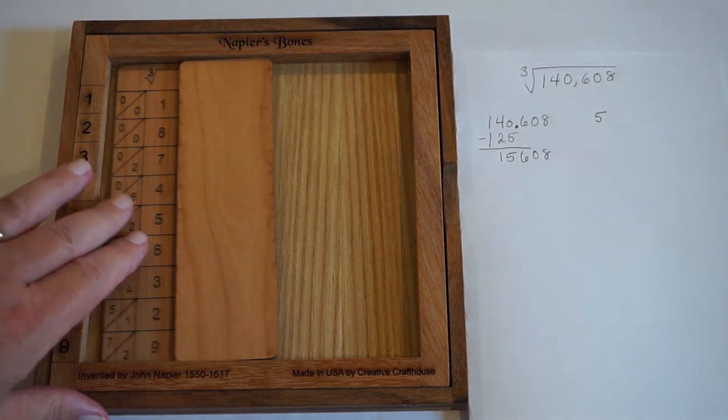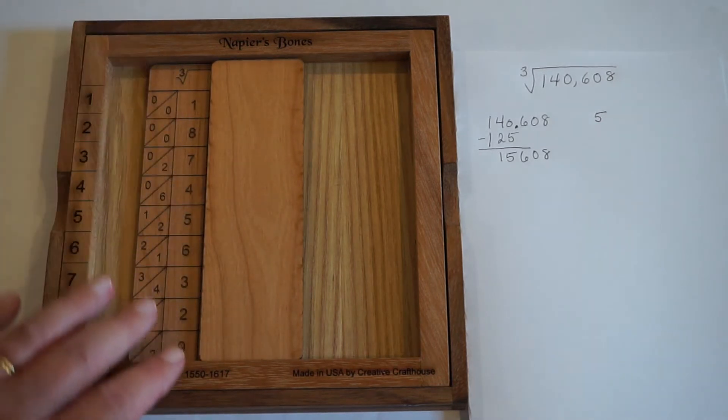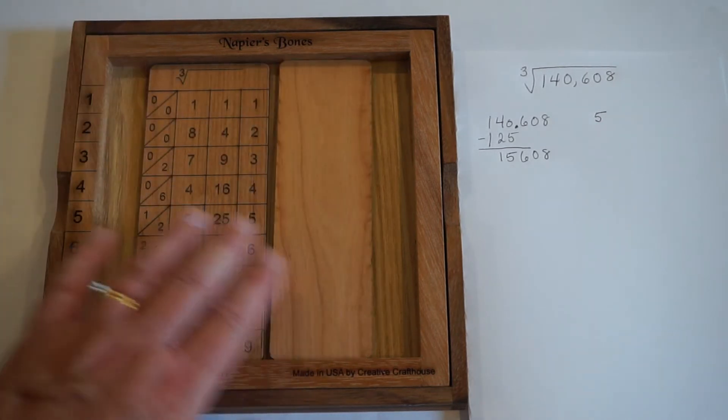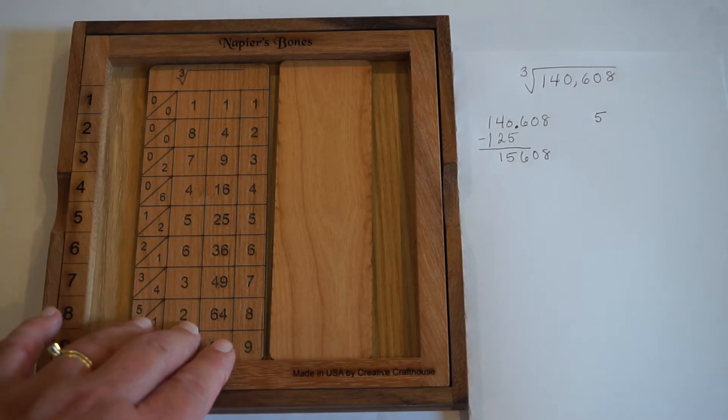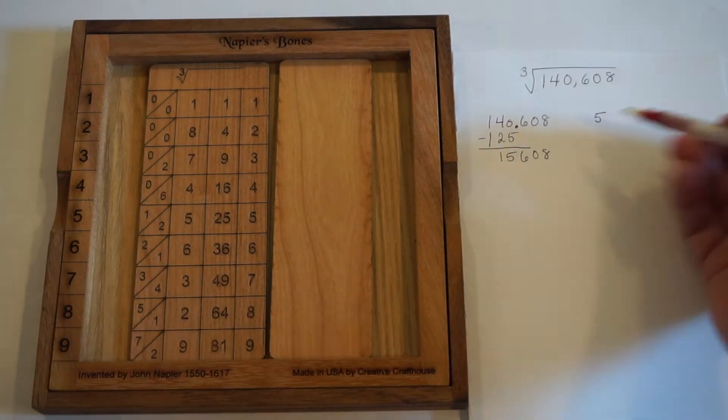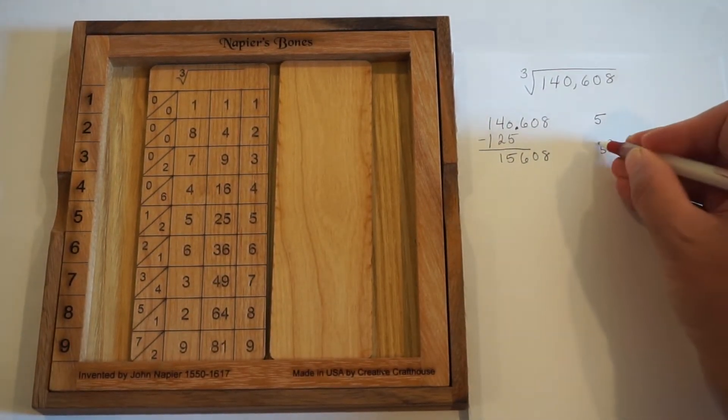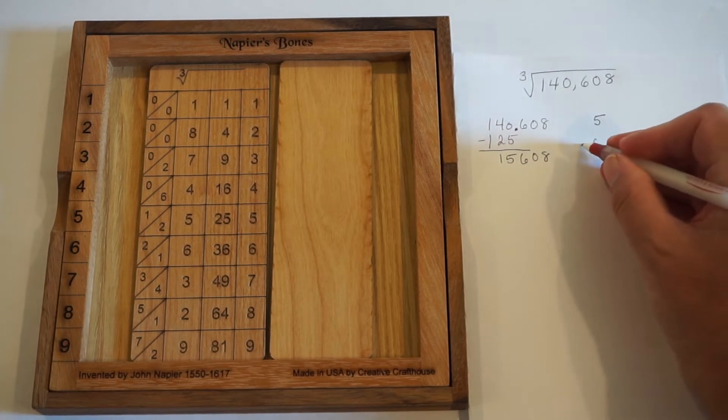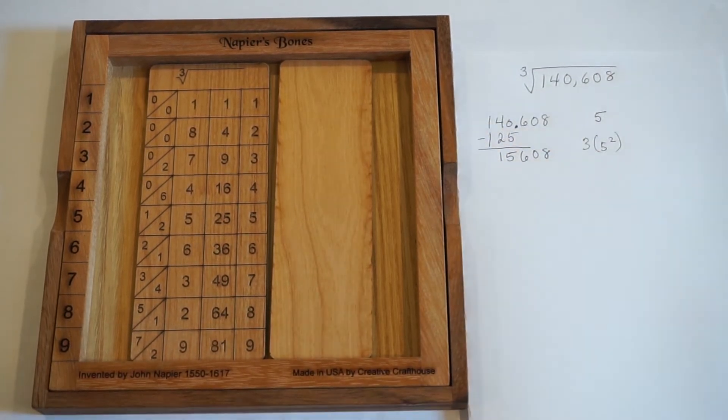And the way we determine what the rods are is we're going to take the first part of our answer and square it, and we're going to multiply that by three.